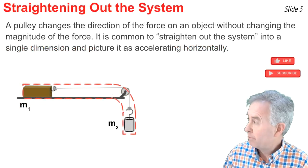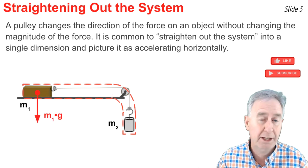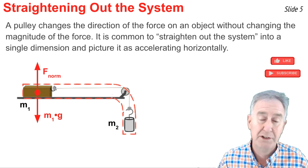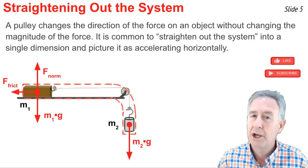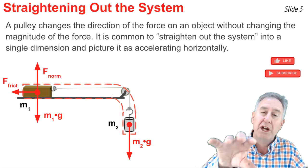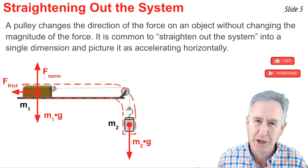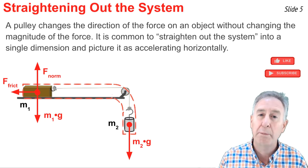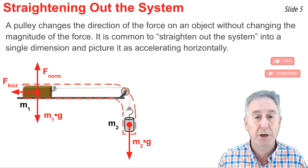When we draw our system, we think of the mass on the table, the string, and the hanging mass as being one large object. We begin drawing forces: the downward force of gravity and the normal force on the table mass — these balance because that mass doesn't accelerate vertically — and friction on that mass, plus gravity on the hanging mass. The tension force is not drawn for the system because the string is part of the system. We then mentally straighten out the object into a linear system, since the pulley changes the direction of a force without changing its magnitude.